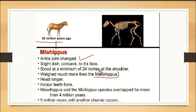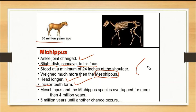Mesohippus had a longer head and incisor teeth formed. It had a slightly dished, concave face. Miohippus looked like a newcomer; in fact, its size may have increased. It took about 40 million years, and until another change it took 5 million years — so there have been some changes.